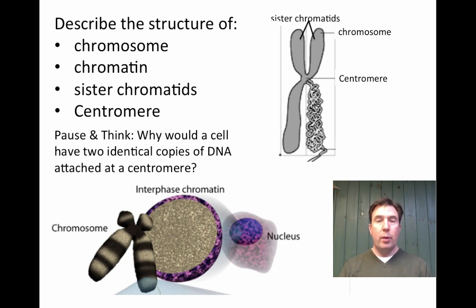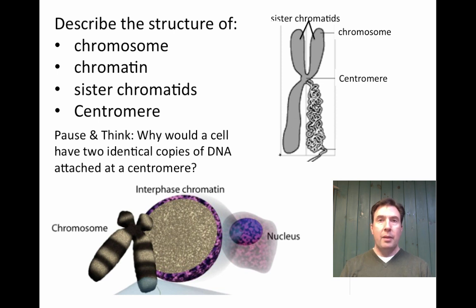A single chromatid could be called a chromosome, or a double chromatid may also be called a chromosome. Consider this question: why would a cell have two identical copies of DNA attached at a centromere? The answer is that if a cell is going to divide, it needs two identical copies so that each daughter cell ends up with equal amounts of genetic information. You don't want to split up the library — every daughter cell must have identical information. That's why we sometimes see two-chromatid chromosomes and other times only one.